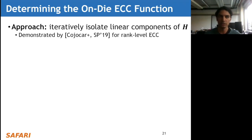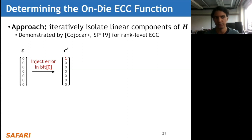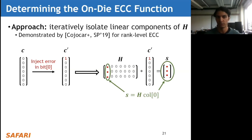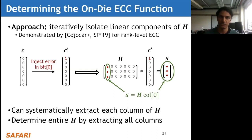The approach BEER uses is to iteratively isolate each of the linear components of the H matrix. This approach was demonstrated by prior work in 2019 for rank-level ECC. Suppose we start with a code word of all zeros and first inject errors in position zero - code word prime has a single bit error at bit zero. When we compute the error syndrome, all other entries in H are zeros, so the error syndrome S equals exactly the first column of the parity check matrix. We can repeat this procedure by injecting errors in each different bit position and systematically extract every single column of the H matrix.